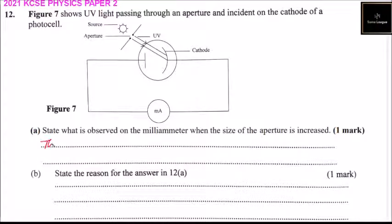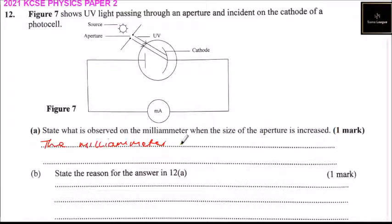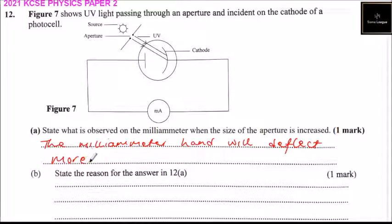The millimeter hand will deflect more — or you can say higher, something like that. That is correct. You get one mark.